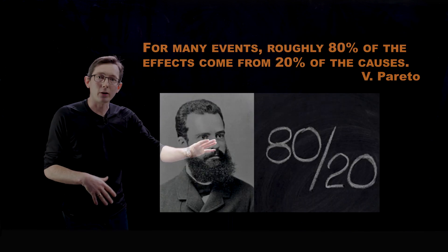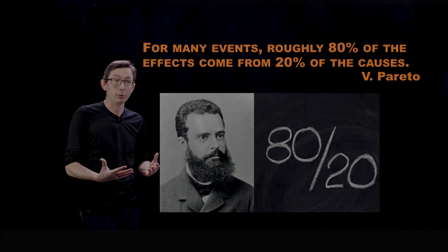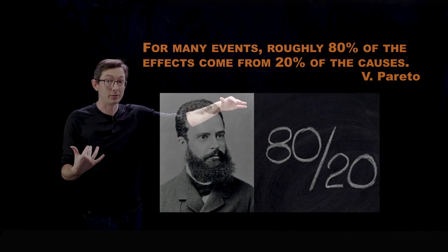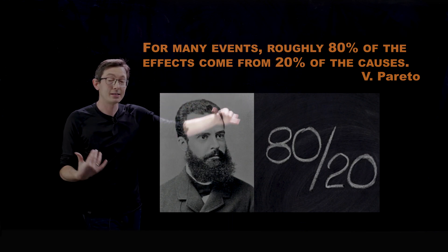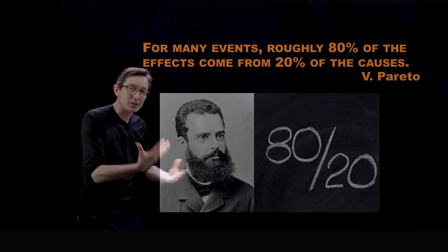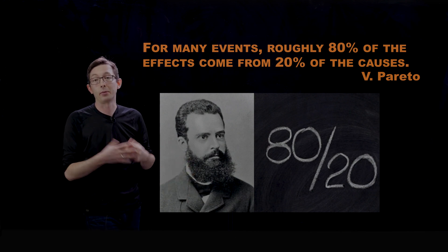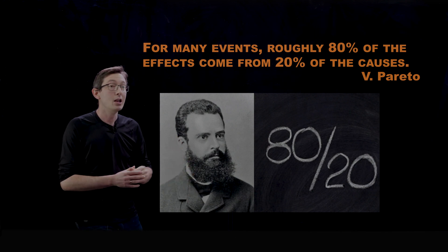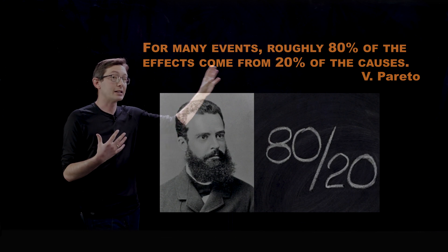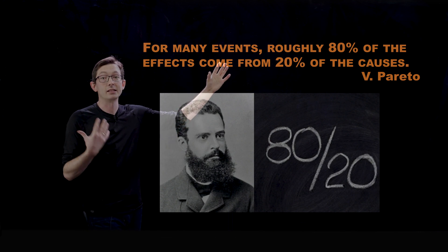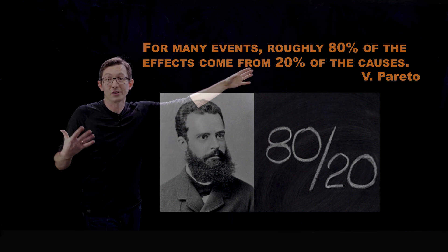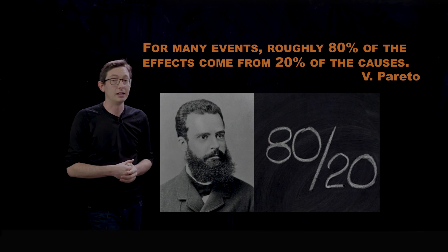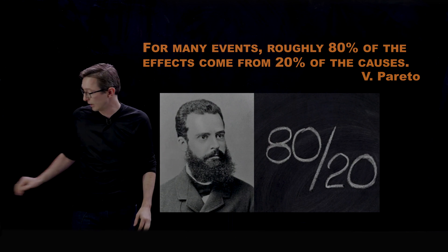Many of you have heard of the Pareto rule, the 80-20 rule: roughly 80% of the effects come from 20% of the causes. This is another take on that parsimonious principle and Occam's razor. You can generally explain most things with a relatively few or simple set of causes.